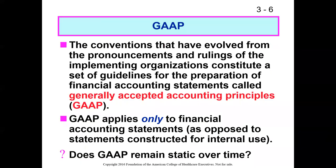GAAP — Generally Accepted Accounting Principles — is the overall collection of agreements on how financial accounting statements are supposed to be produced and the conventions we use to assemble them, so that we are all communicating the same way. Think of it as using the same grammar to write our financial statements.